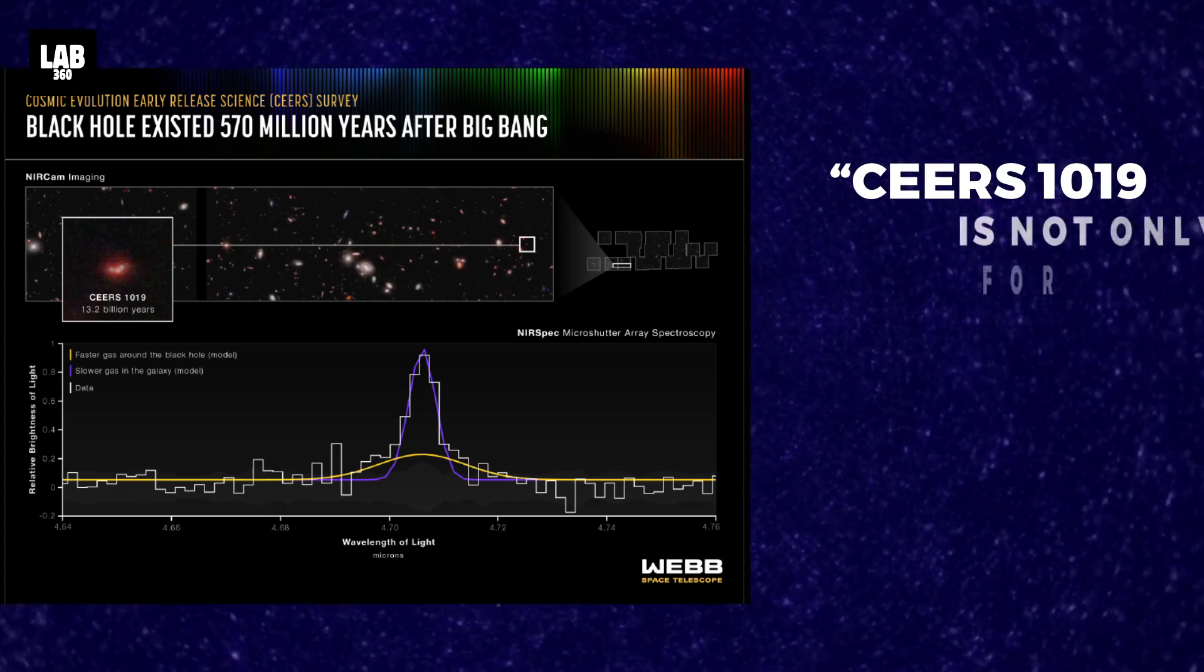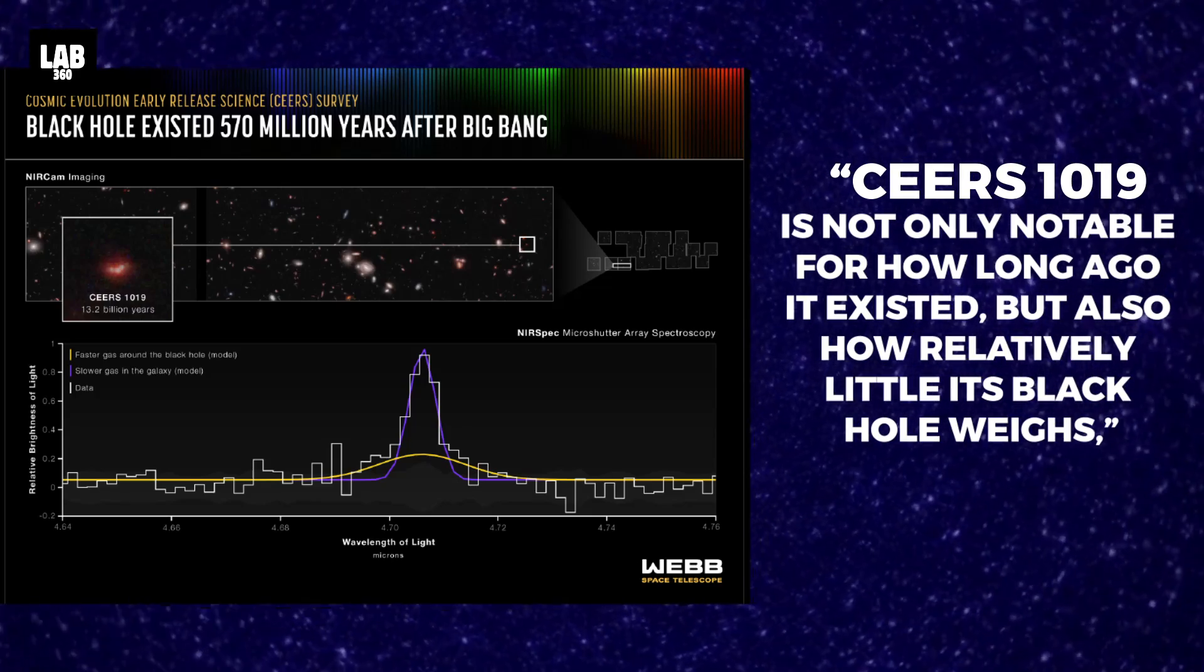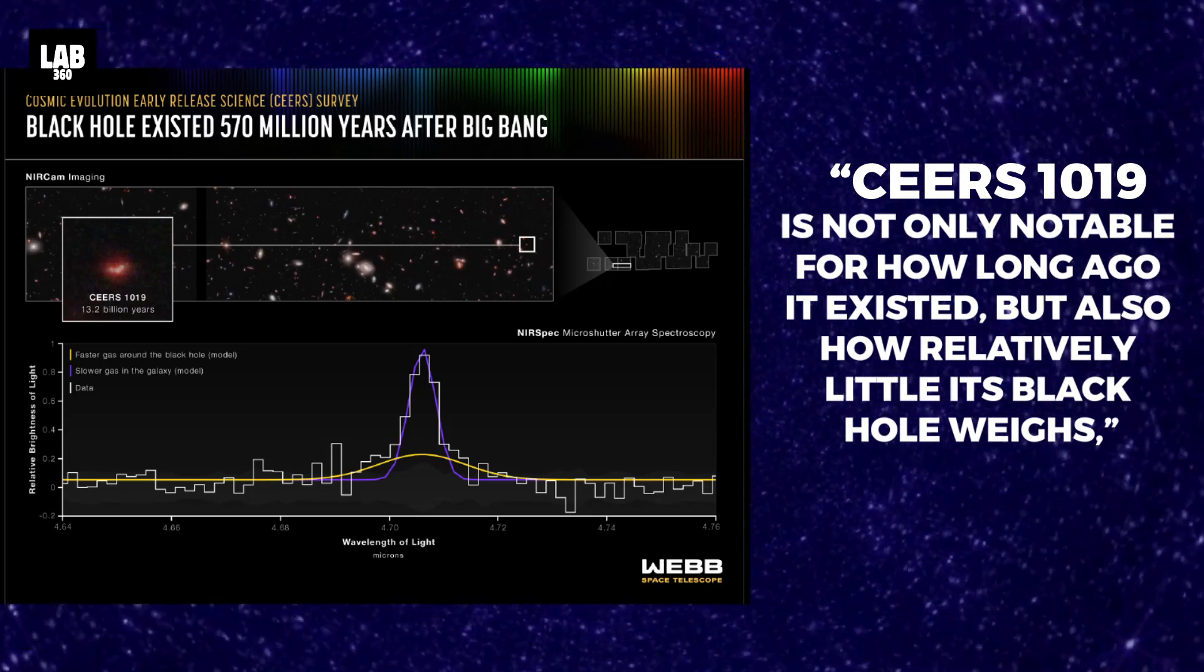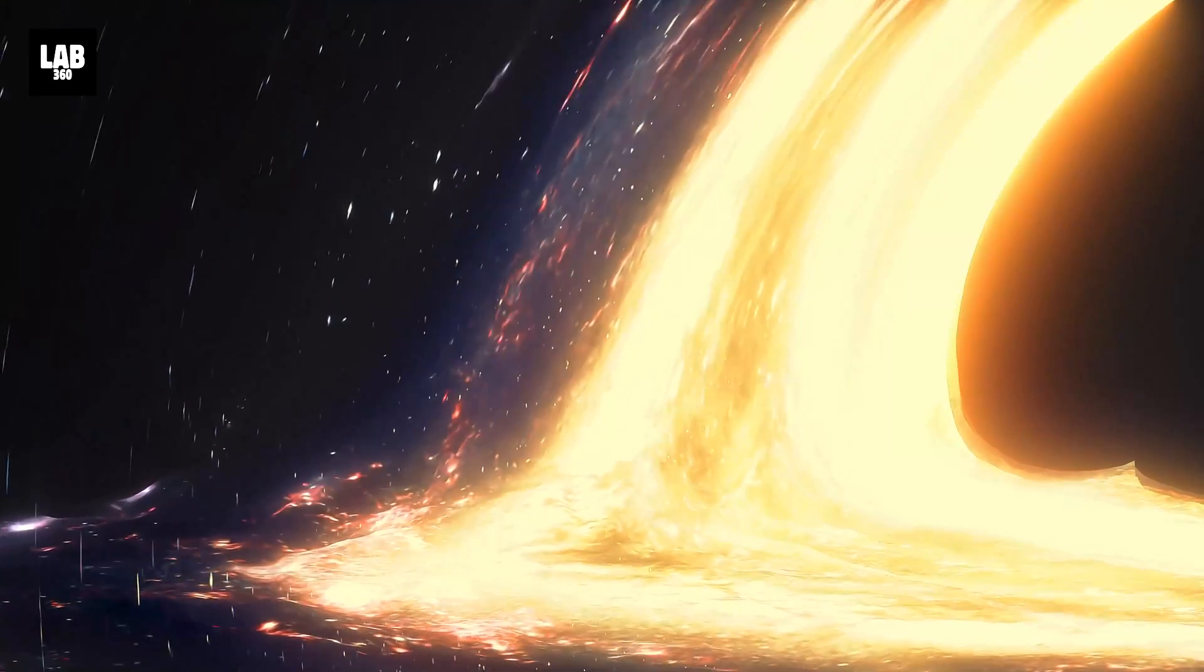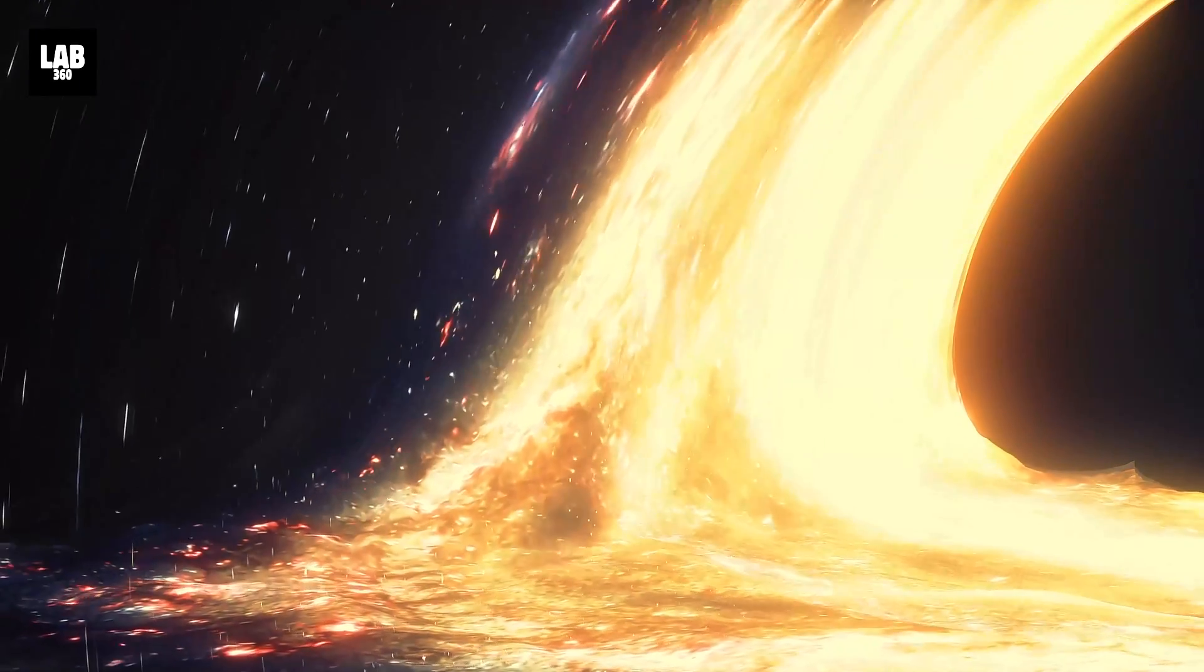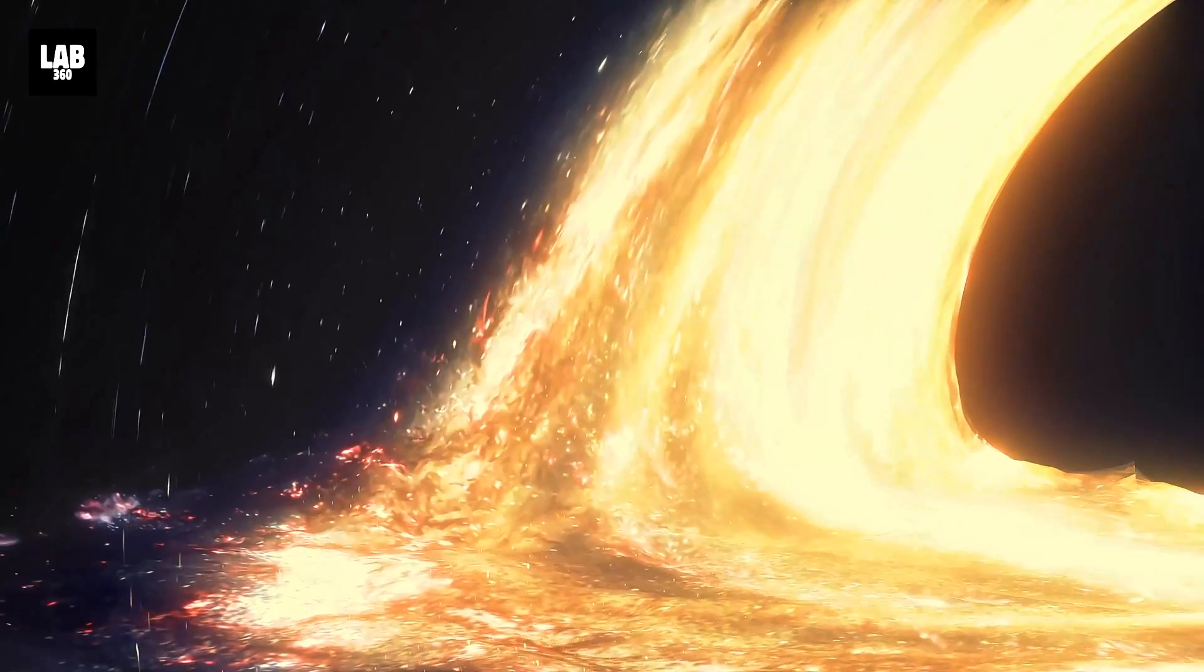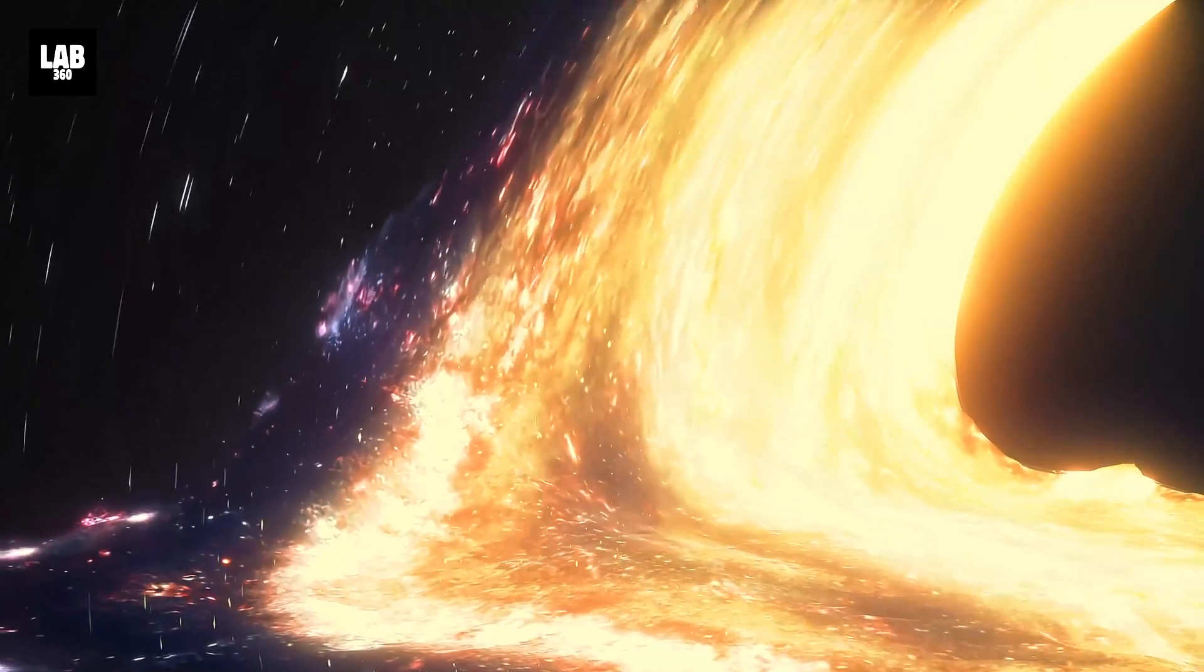Sears 1019 is noteworthy not only for its ancient existence but also for the relatively modest mass of its black hole, clarified NASA. It weighs a substantial nine million times more than the sun, yet it pales in comparison to the behemoths often found at the centers of galaxies during the early universe, which can be over one billion times heavier.